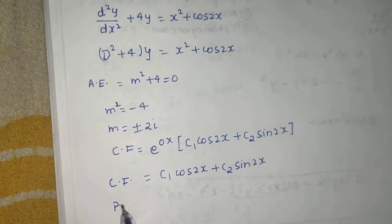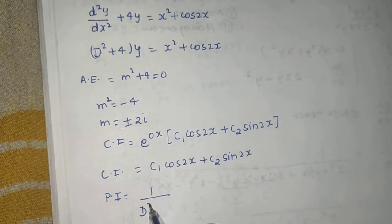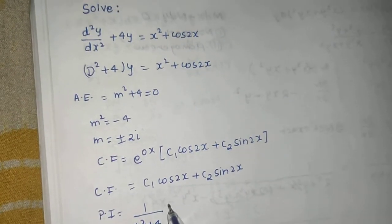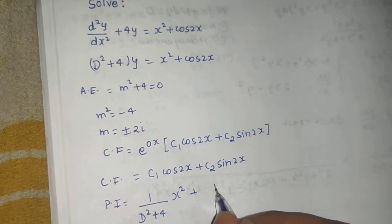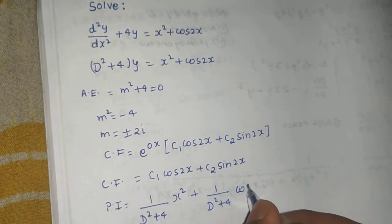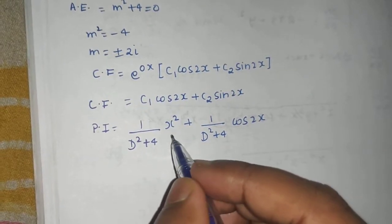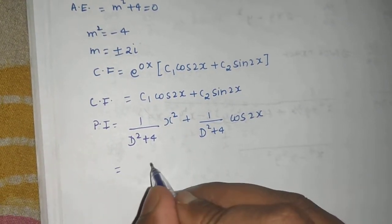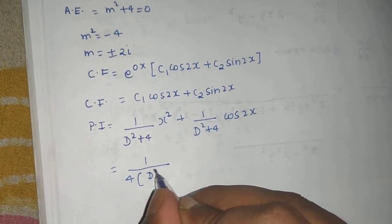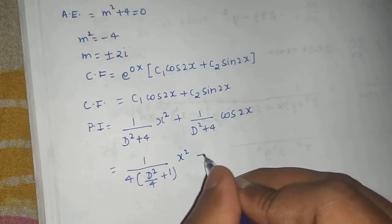Coming to the particular integral which will be 1/(f(D)) which is D² + 4 that will operate on the RHS. So I can distribute that on x² plus 1/(D² + 4) will operate on cos(2x). Now what is the rule for x²? Take the lowest degree term common in denominator. So you will get (D²/4 + 1). This will operate on x² plus.